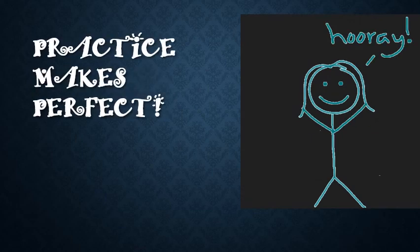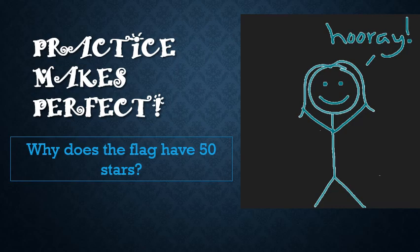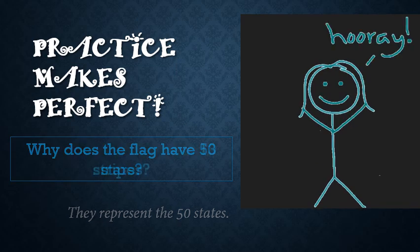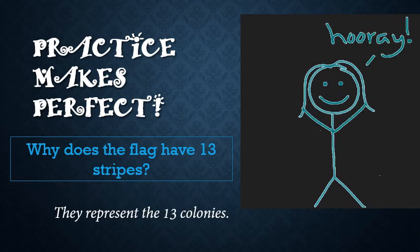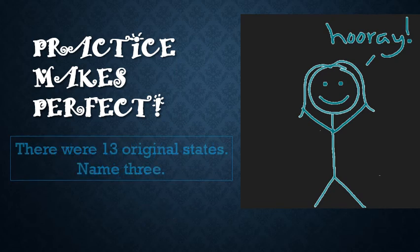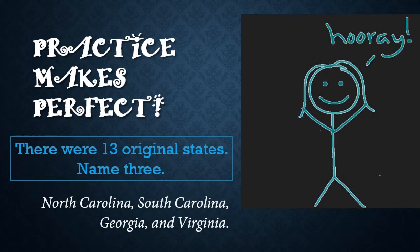Alright, let's review quickly — practice makes perfect. Why does the flag have 50 stars? Because they represent the 50 states. Why does the flag have 13 stripes? Because they represent the 13 colonies. And finally, there were 13 original states — name three. You can pick any of the 13, but I have here: North Carolina, South Carolina, Georgia, and Virginia. A little extra note doesn't hurt.